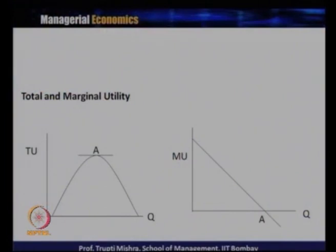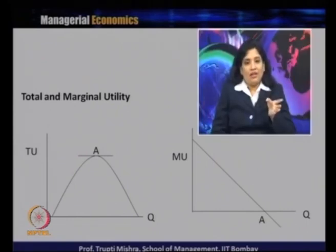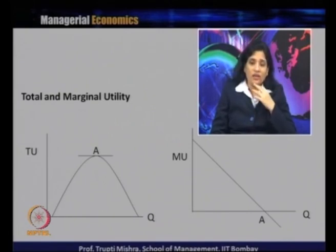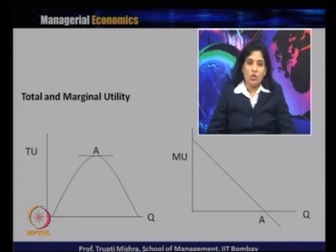Graphically, the total utility curve takes an inverted-U shape — it initially increases, reaches a maximum, then decreases. Marginal utility is the slope of the total utility curve, starting at a higher level and slowly decreasing. Marginal utility decreases as consumption increases; when total utility is increasing at a decreasing rate, marginal utility is positive but falling. When total utility reaches its maximum, marginal utility equals zero; after that it becomes negative.